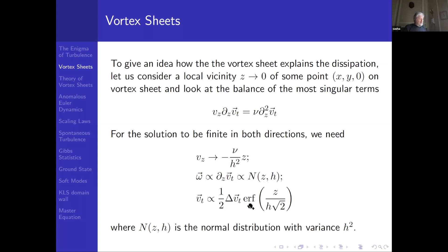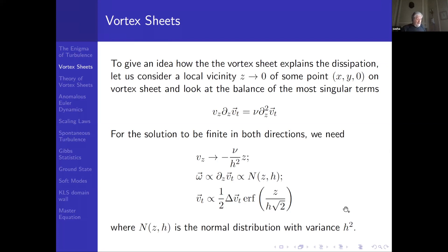What we find immediately is that for this equation to have a solution which decreases in both directions, velocity v_z should go to zero proportional to z, after which this equation can be immediately solved. The solution is the Gaussian for the vorticity and the error function for velocity — the error function of some z divided by some width h — and that width should go to zero to compensate for viscosity. In the limit of vanishing h, the error function becomes a discontinuity, so that becomes the Euler solution with tangent discontinuity.